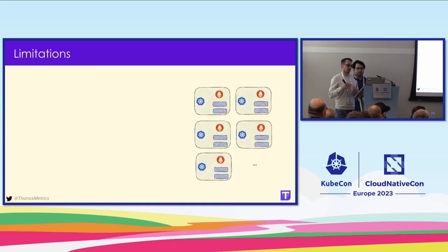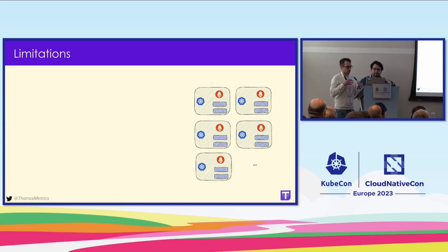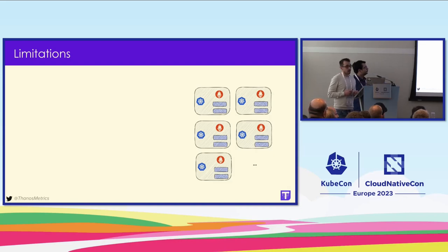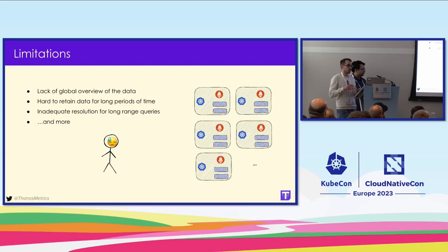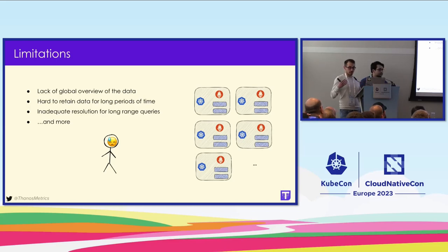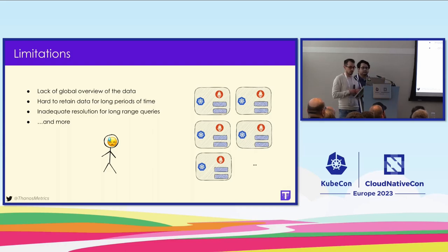If we zoom into the Prometheus design, we see four key modules very relevant to Thanos: the rule manager, which executes alerting rules; the query engine, which executes PromQL; the time series database, which stores metrics on disk; and the compactor, which optimizes the layout of metrics on disk over time. If we were to use Prometheus to monitor various environments, we would need to deploy at least one Prometheus instance per environment, as Prometheus cannot handle a multi-environment setup.